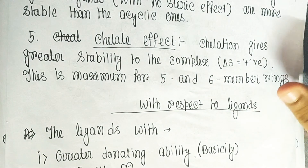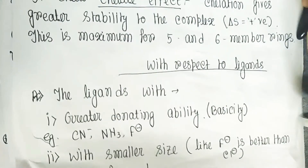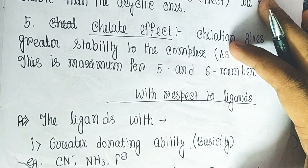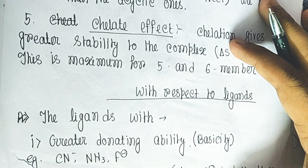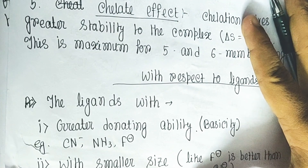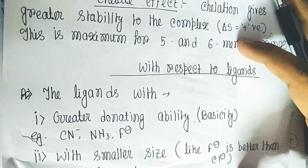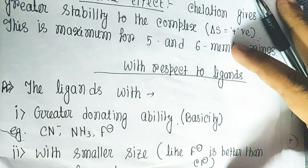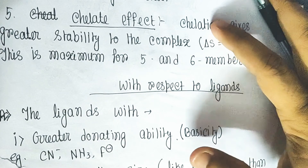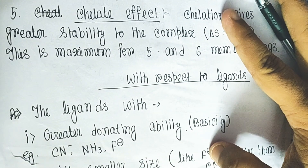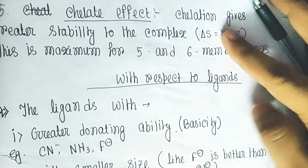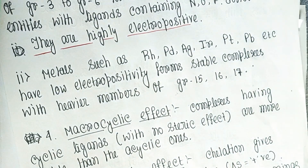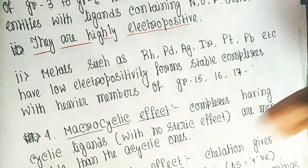Now, considering the ligands — the first and most important point is that ligands need to have greater donating ability, meaning greater basicity. Cyanide, NHC, and F⁻ are very good donors and can make stronger complexes. Smaller size also relates to greater charge density, so smaller ligands can donate to a greater extent. For example, F⁻ forms more stable complexes than Cl⁻. These are the key factors that enhance or decrease the stability of a complex.